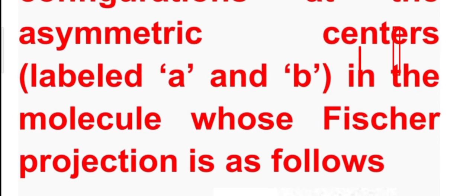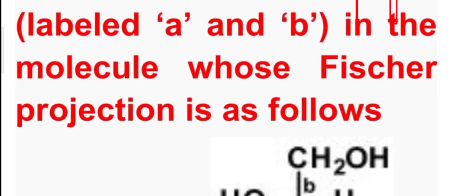The absolute configurations at the asymmetric centers labeled as 'a' and 'b' in the molecule whose Fisher projection is as follows. So the molecule is given along with its Fisher projection. There are two chiral centers, a and b.